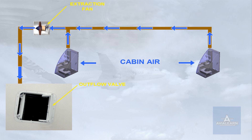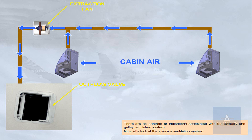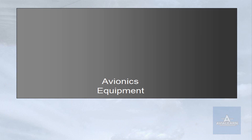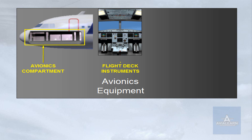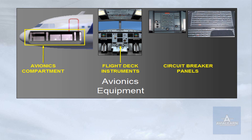Now let's look at the avionics ventilation system. The avionics ventilation system provides cooling air for the avionics equipment. This equipment includes the avionics compartment, the flight deck instruments, and the circuit breaker panels.